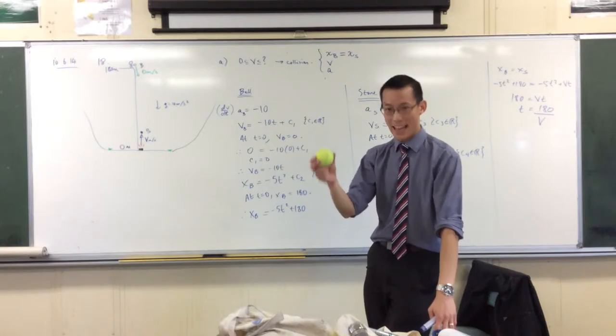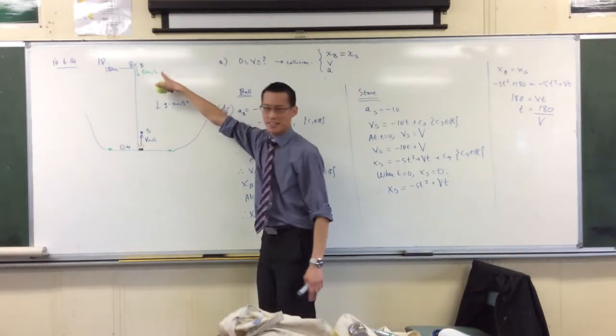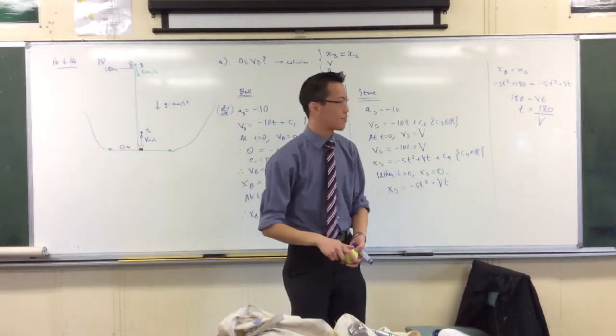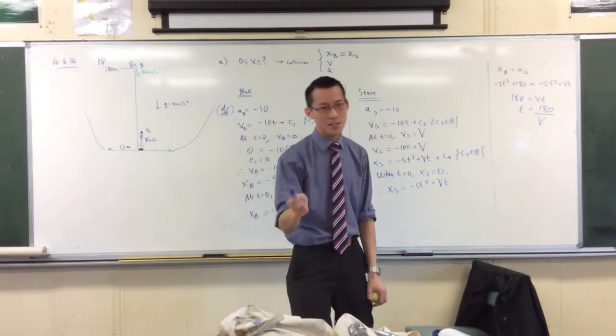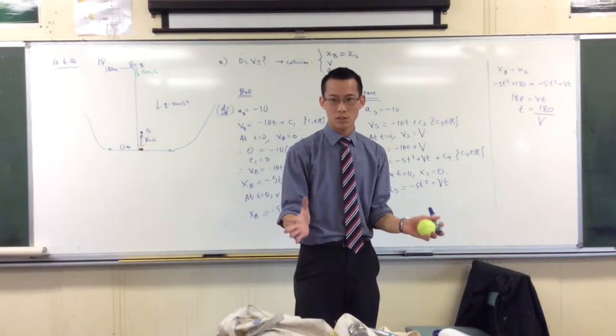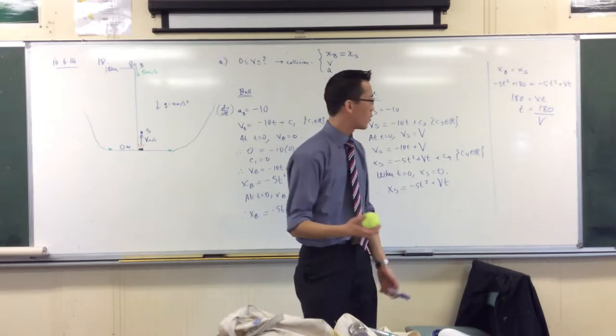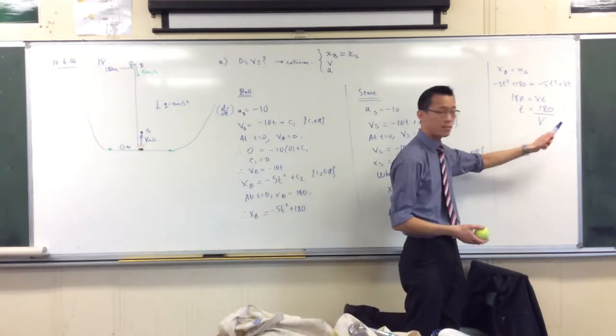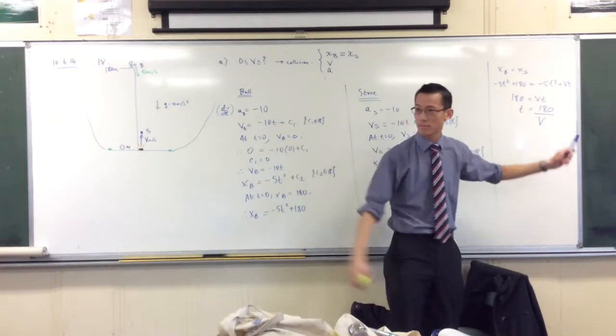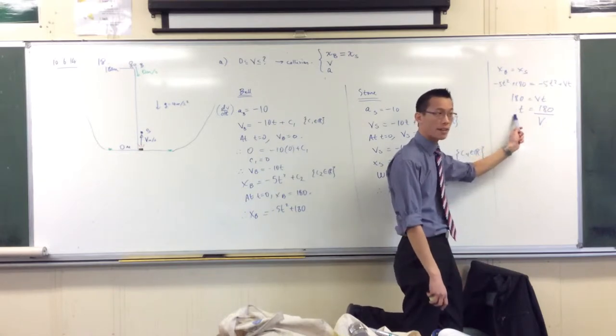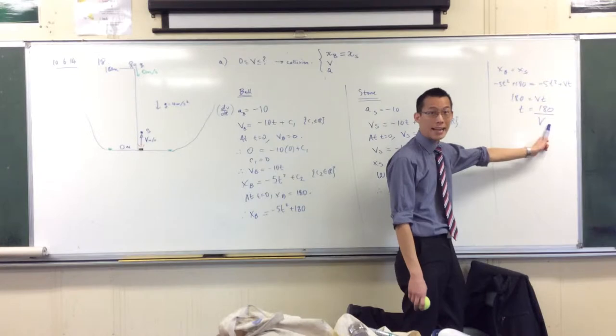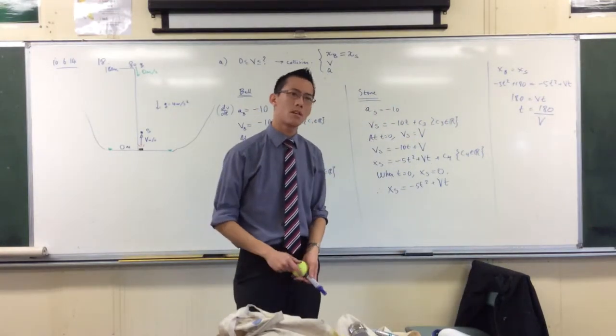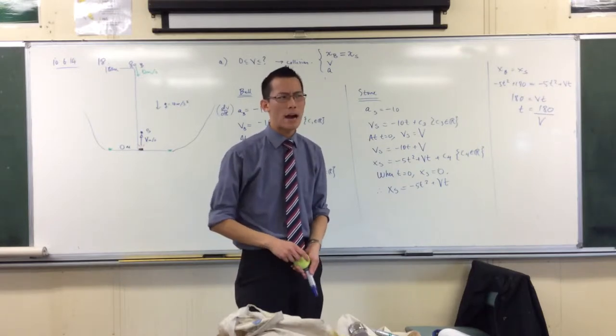This ball would come back down to the ground before the ball had a chance to get anywhere close to the stone. Now let me approach that from another way of thinking about this. You tell me there's no solution, right? But I think there is. When I look at this equation, it tells you given a certain velocity that I threw the stone, I'll tell you when the two things collide. If I put V equals one in there, I get 180. What units? Seconds. Three minutes seems like a solution to me. Why isn't it a solution?